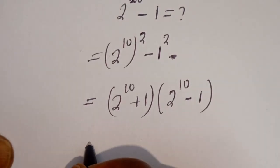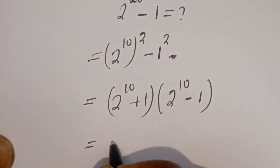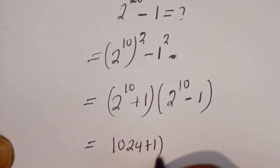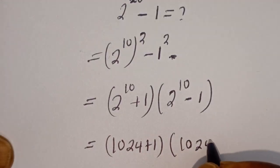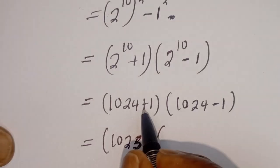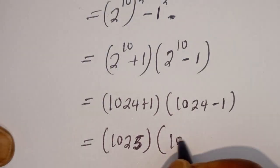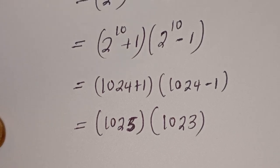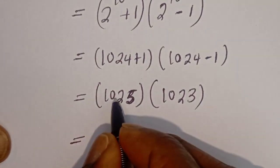Then here we have 2 to the power of 10, which is 1024, plus 1 bracket 1024 minus 1. This gives us 1025 bracket 1023. Then 1025 can be written as 1000 plus 25, and 1023 can be written as 1000 plus 23.